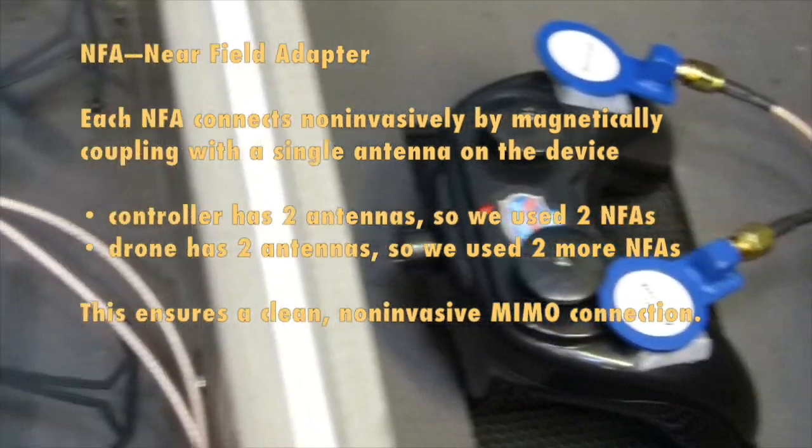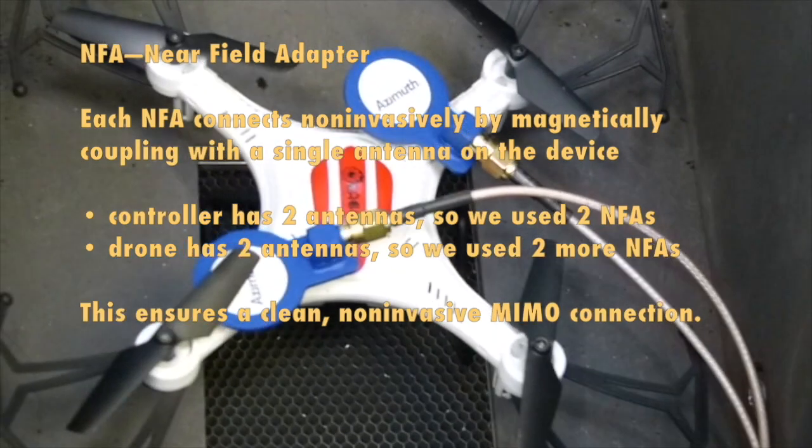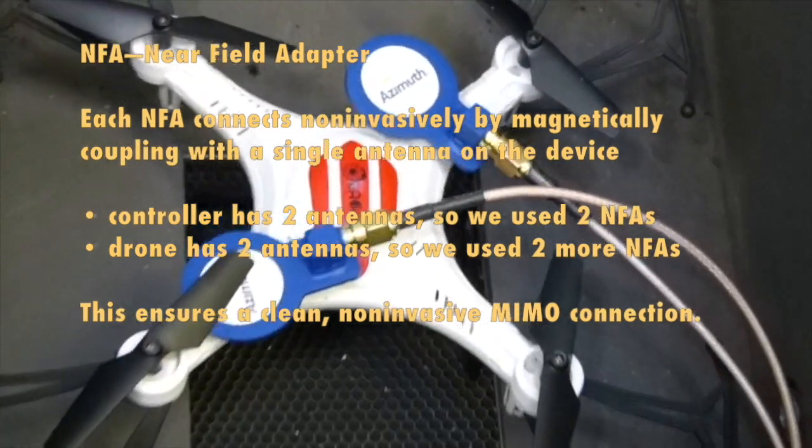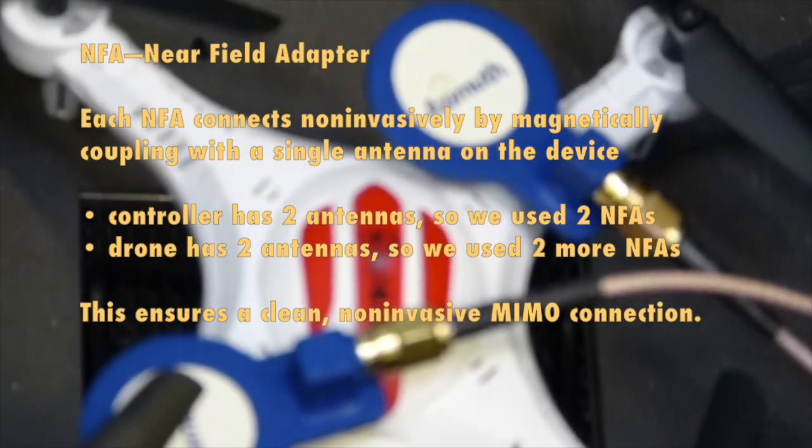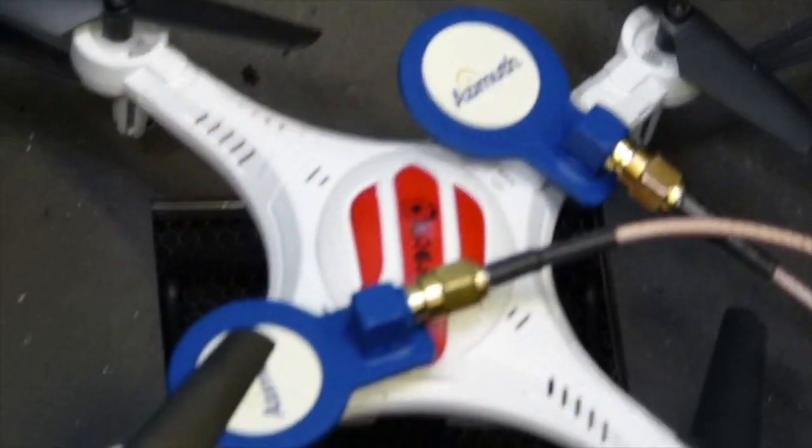Each near-field adapter connects or magnetically couples with an antenna on the device. Now, these are highly selective, which means that if I have a device with multiple antennas, each near-field adapter will couple with just one specific antenna, thereby helping you make sure that you achieve a MIMO connection.